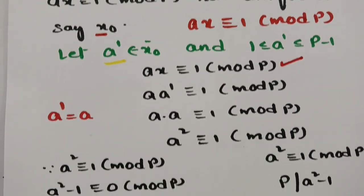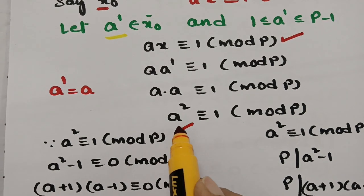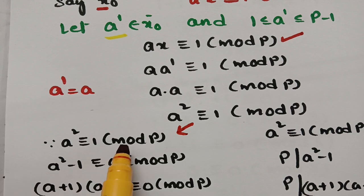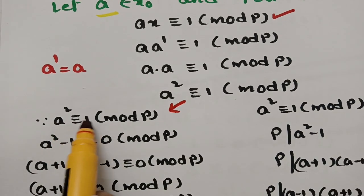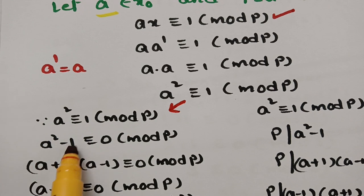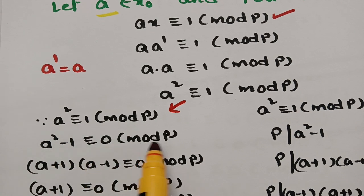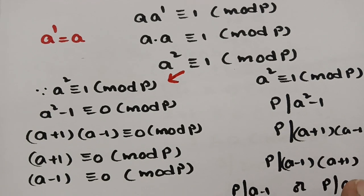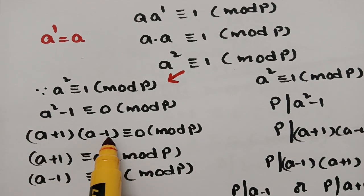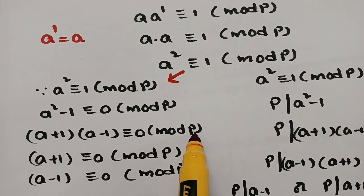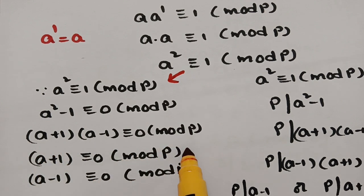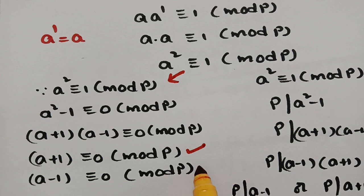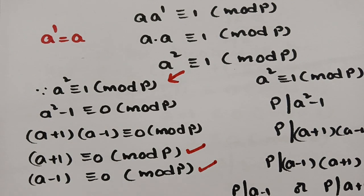From a² ≡ 1 (mod p), subtracting 1 from both sides gives a² − 1 ≡ 0 (mod p), which factors as (a+1)(a−1) ≡ 0 (mod p). Therefore, either a+1 ≡ 0 (mod p) or a−1 ≡ 0 (mod p). So there are two cases.